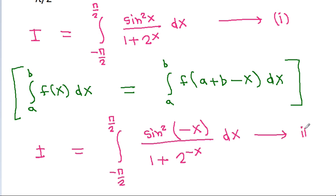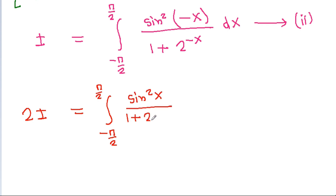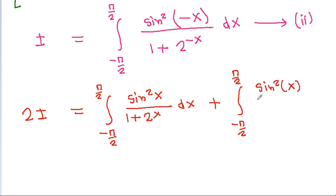Suppose this is equation 2. If we add equation 1 and equation 2, then we will get i plus i, that is 2i, equal to the integral from minus pi by 2 to pi by 2 of sine square x by 1 plus 2 power x dx, plus the integral from minus pi by 2 to pi by 2 of sine square(minus x) by 1 plus 2 power(minus x) dx.